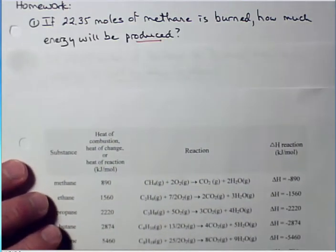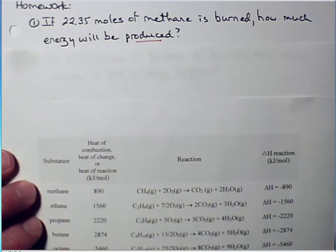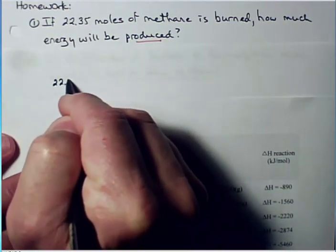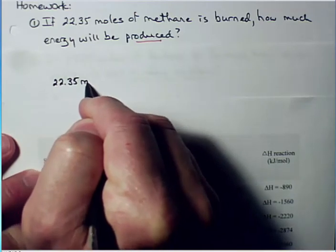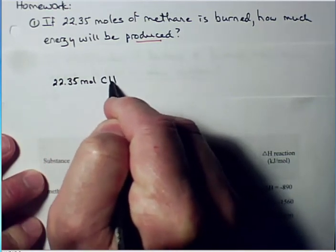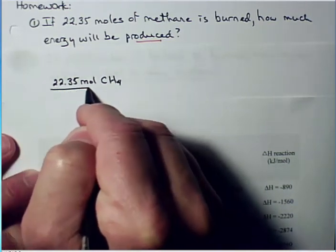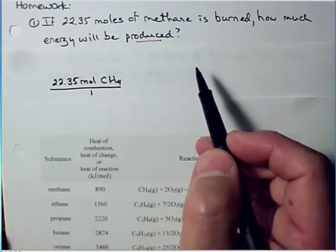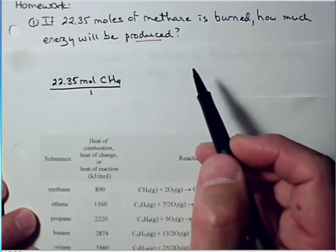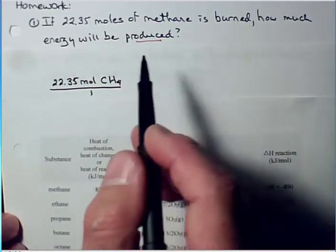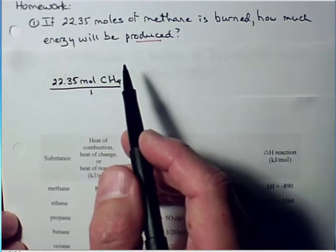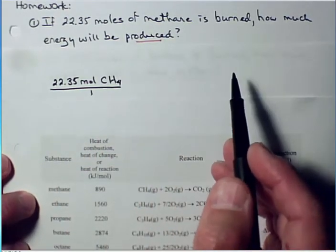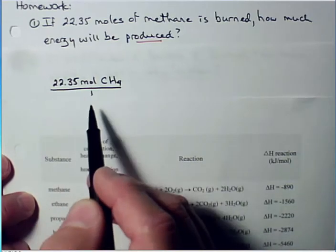If we have 22.35 moles of methane, so 22.35 moles of CH4, we're going to put that over one because that's our standalone amount. The sentence doesn't say this amount is equal to something - it says we're starting with this amount and we're trying to find something else about it, how much energy is produced.